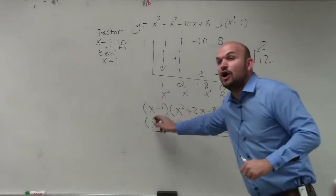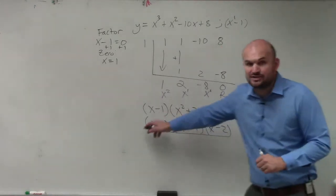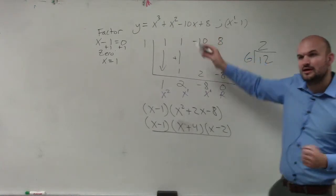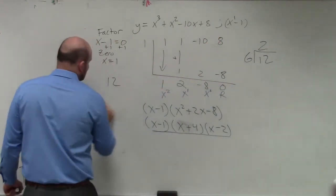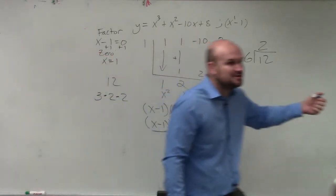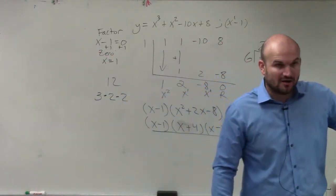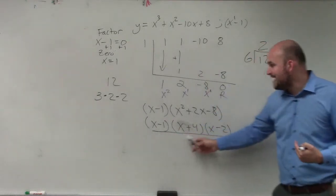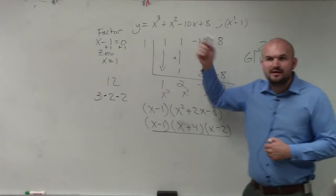If you were to multiply all those polynomials, all these factors, what would you get? Your original polynomial. Just like when we did 12, the completely factored form of 12 was 3 times 2 times 2. If I multiply 3 times 2 times 2, what does that give me? 12. So when I completely factor a polynomial, these factors multiply to give you this.